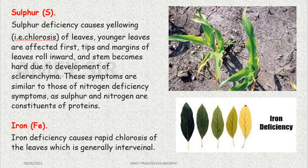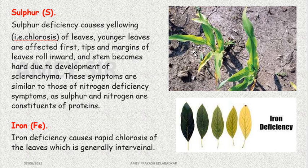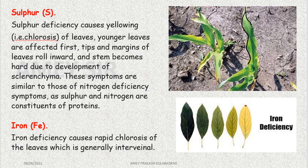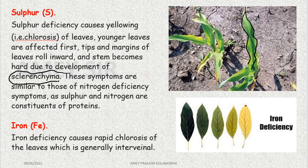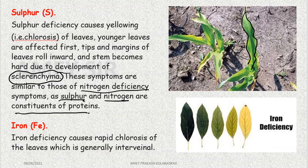Another important element is sulfur. Sulfur deficiency leads to chlorosis. I have now explained five elements to you — in all of them, necrosis, chlorosis, yellowing of leaves, stunted growth are common symptoms. In sulfur deficiency, leaves roll inward, reducing surface area. Development of sclerenchyma increases in such places — it is a dead tissue. The symptoms are similar to nitrogen deficiency because sulfur and nitrogen are both constituent elements of proteins.